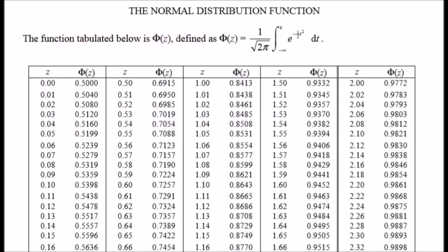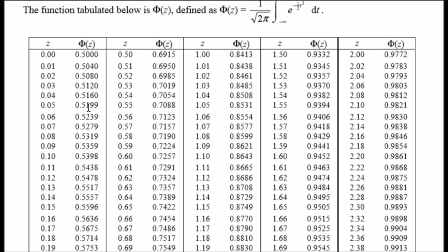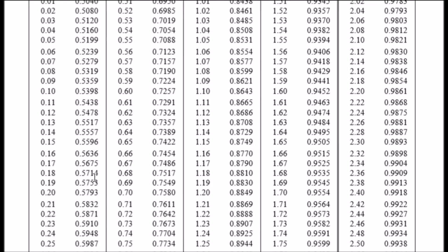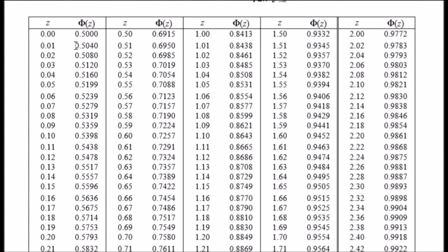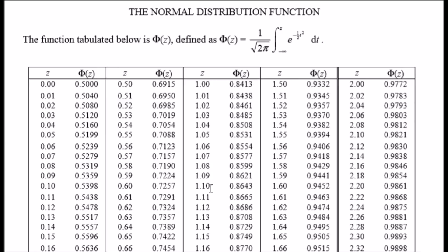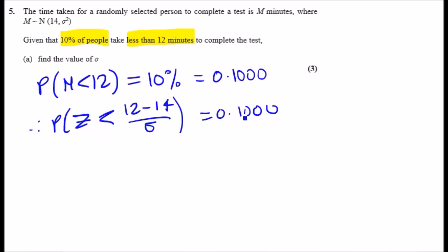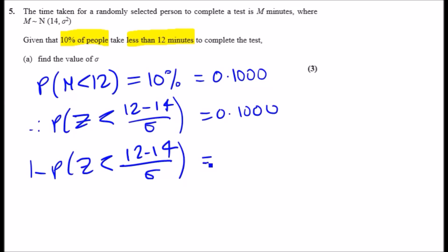Looking at the normal distribution table, the probability values inside start from 0.5 up to 1. So technically we need to find the reverse value — the 1-minus value. Taking 1 minus both sides gives us 1 minus P(Z < (12−14)/σ) = 0.900. Using the symmetry property of the normal distribution, if you have 1 minus the probability you can bring the minus sign inside.